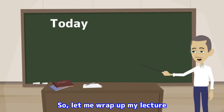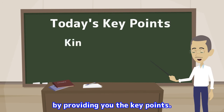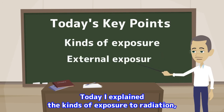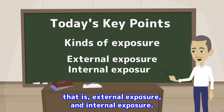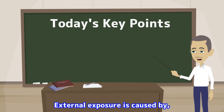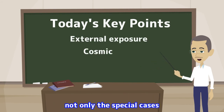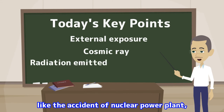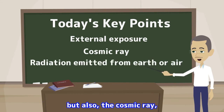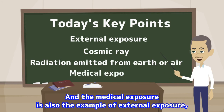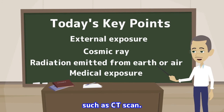So, let me wrap up my lecture by providing you the key points. Today I explained the kinds of exposure to radiation — that is, external exposure and internal exposure. External exposure is caused by not only the special cases like the accident of nuclear power plant, but also the cosmic ray, radiation emitted from Earth, or air. And medical exposure is also an example of external exposure, such as CT scan.